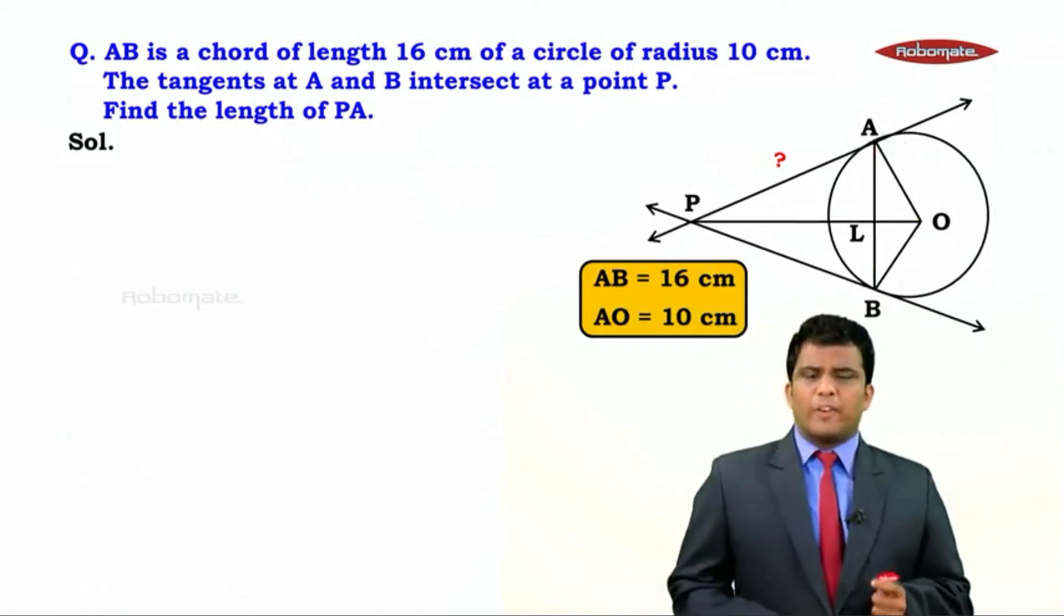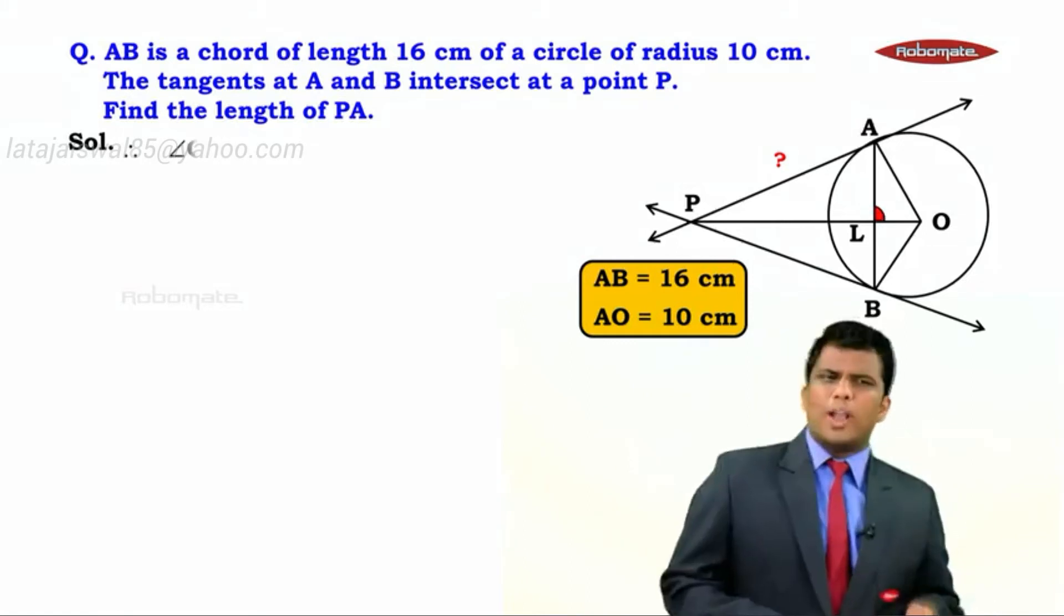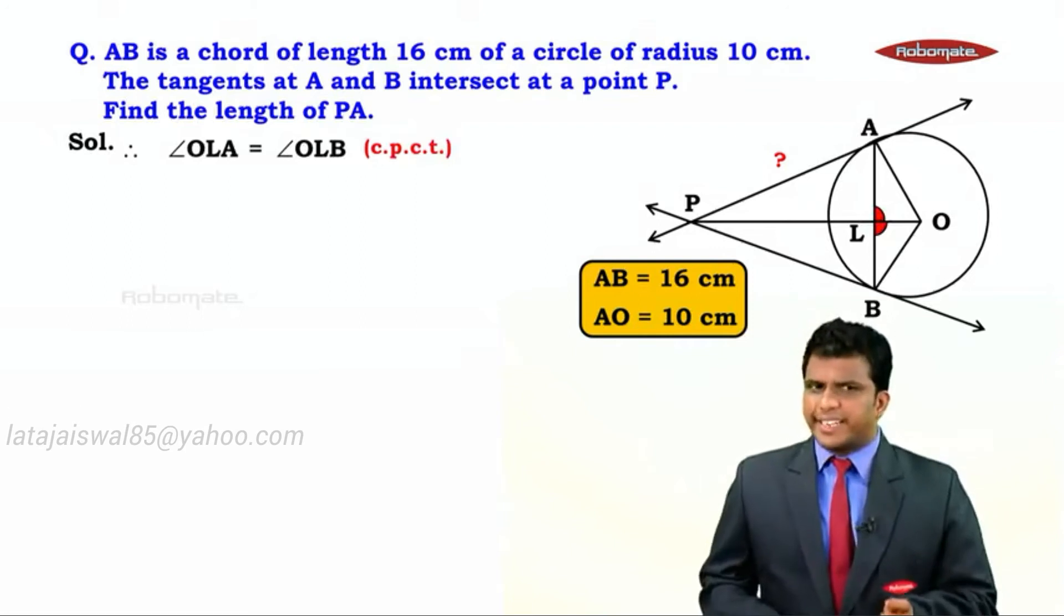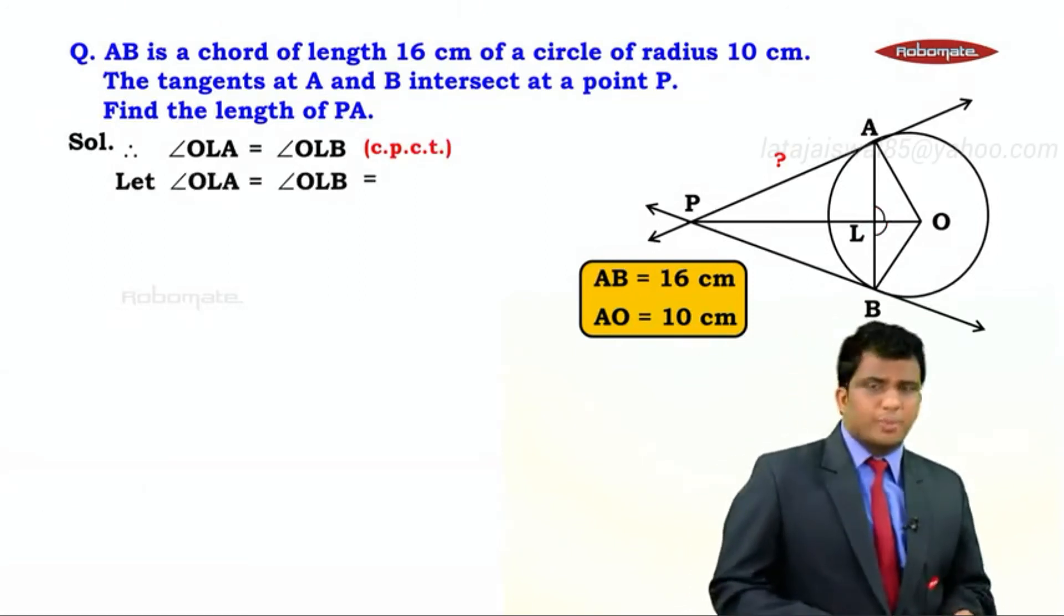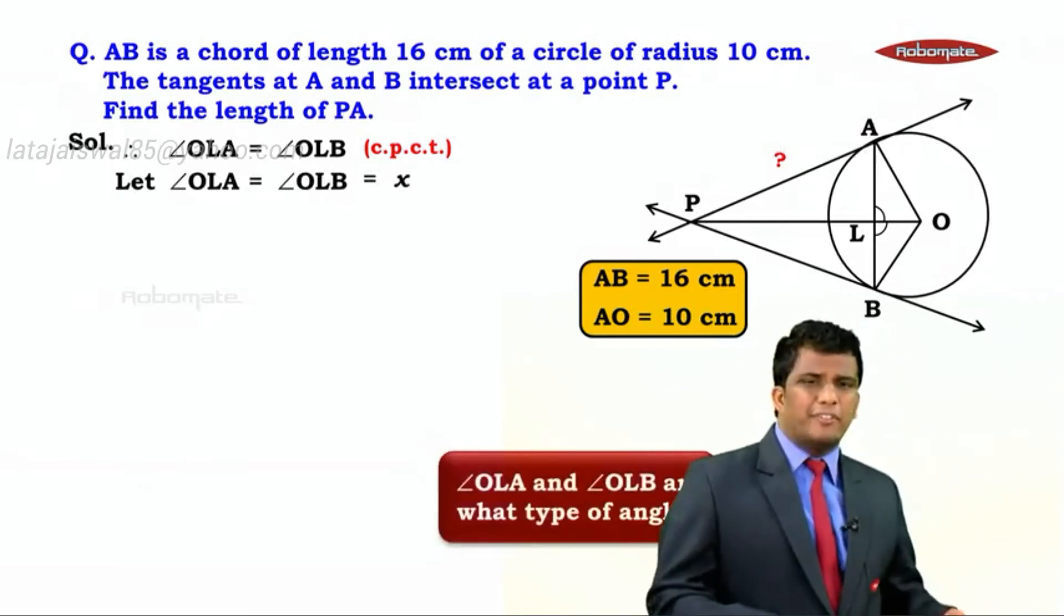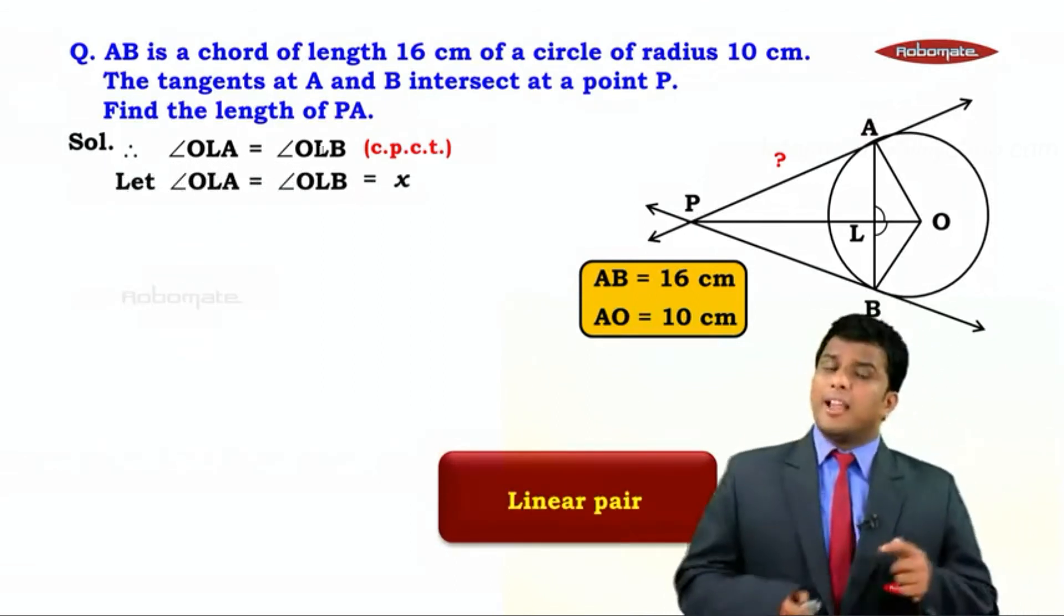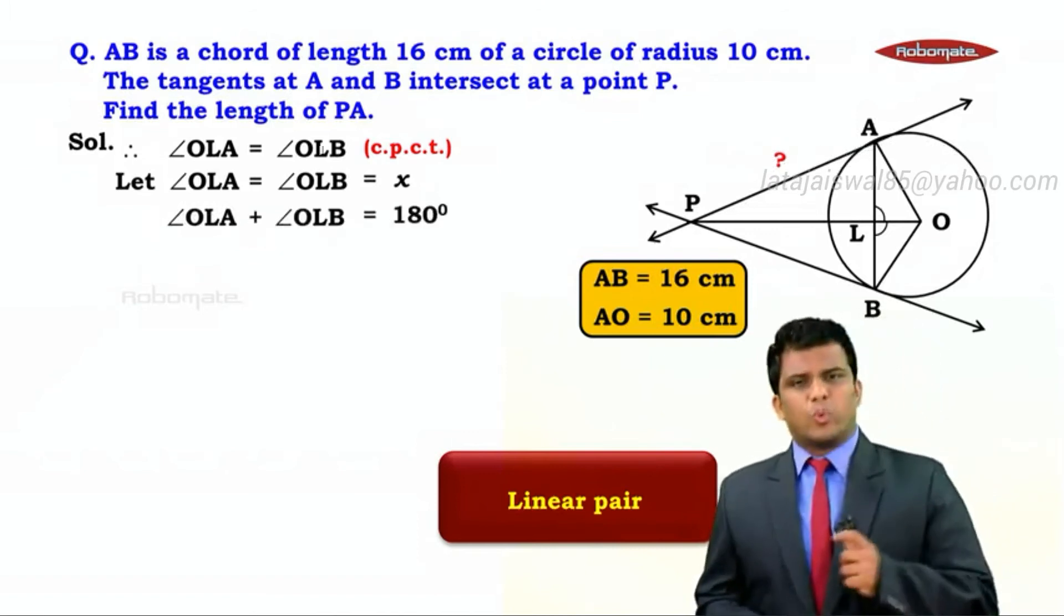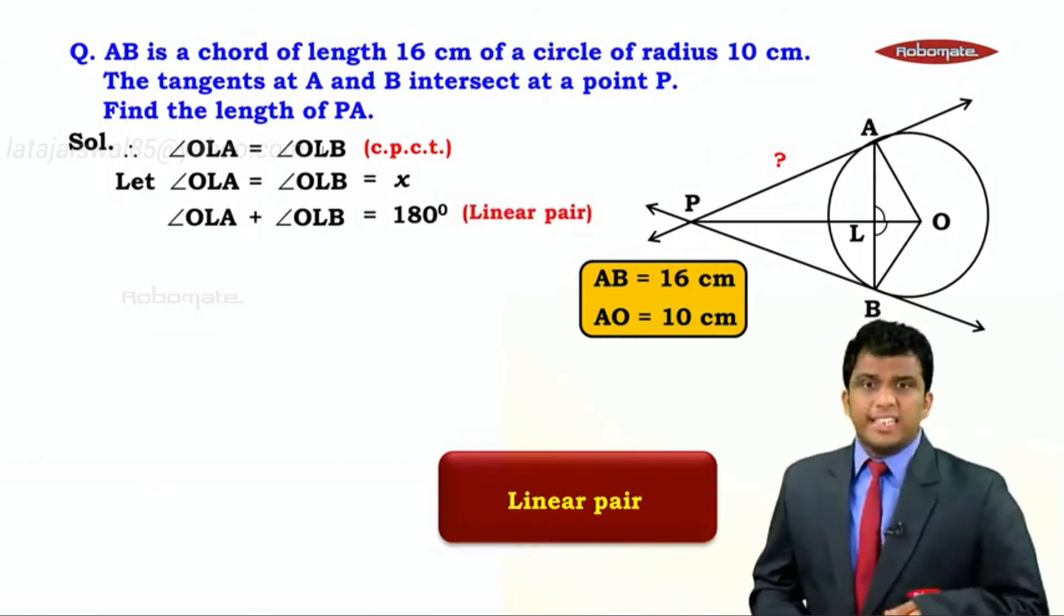Because these triangles are congruent, we now choose the corresponding parts as angle OLA equals angle OLB. The reason is CPCT. We will assume their values to be X to begin with. If you look at angle OLA and angle OLB, they form a pair of linear pair angles. Because they form a linear pair, we know the sum equals 180. Hence, angle OLA plus angle OLB equals 180.